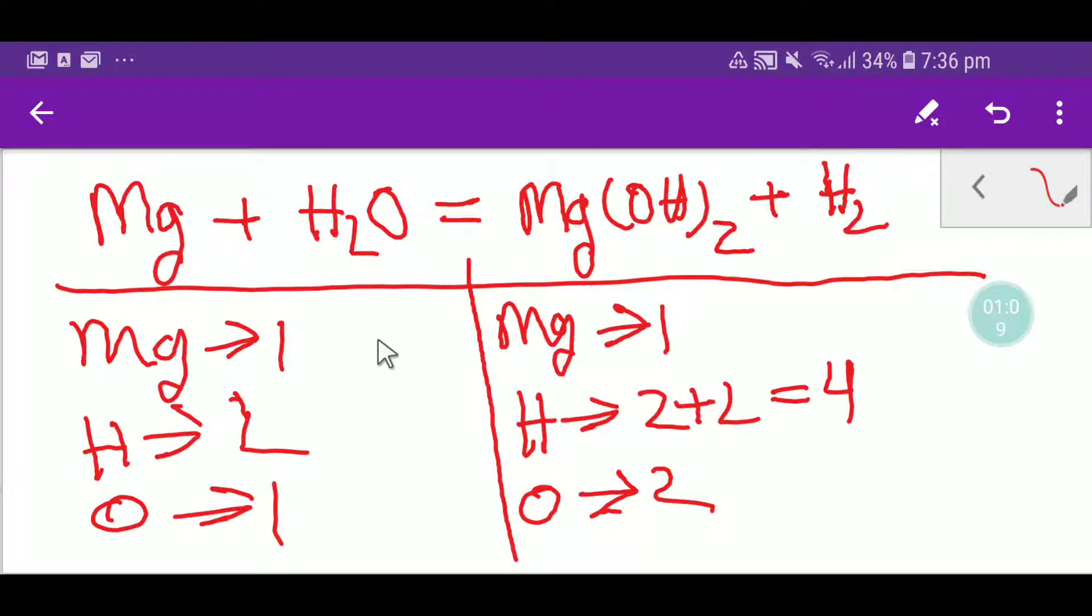Now our magnesium is already balanced and our hydrogen is not balanced. Here we have four, here we have two. So what I can do to balance the hydrogen? I can multiply here by two, that gives me four. Remember this two must come before this hydrogen, that is here, so I have to put here two. If I put here two, the number of oxygen will be changed, so we are getting here two oxygen.